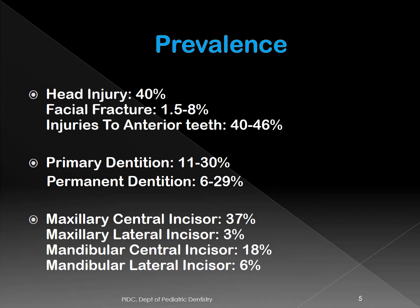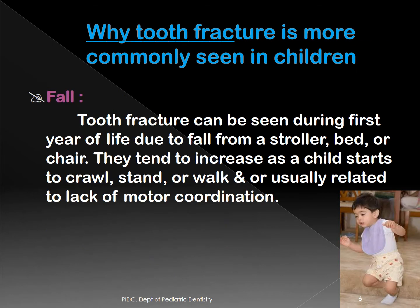In terms of which teeth are most affected, maxillary central incisors have the highest prevalence of fracture, followed by mandibular central incisors. Tooth fracture is more commonly seen in children because they are prone to falling while learning to walk and climbing things as they explore their environment.